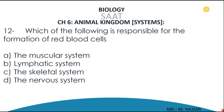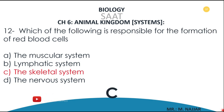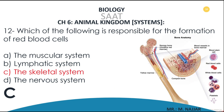Question number twelve: which of the following is responsible for the formation of red blood cells? A) the muscular system, B) lymphatic system, C) the skeletal system, D) the nervous system. The correct answer is C — the skeletal system. All components of blood cells are made in the bone marrow, and bone marrow is found inside the bones, which are part of the skeletal system.